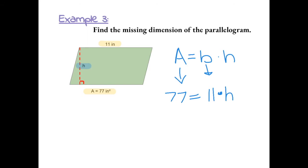h is being multiplied by 11, so we could do the inverse and divide both sides by 11. 11 over 11 cancels out and we're left with h equals 77 divided by 11 gives us 7. So the height is equal to 7 inches. We don't square this because now we have a dimension and not the area.